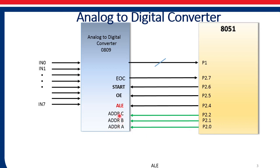Address A, address B, and address C are connected to P2.0, P2.1, and P2.2. ALE is connected to P2.4, OE (output enable pin) is connected to P2.5, the start pin is connected to P2.6, and EOC is connected to P2.7.